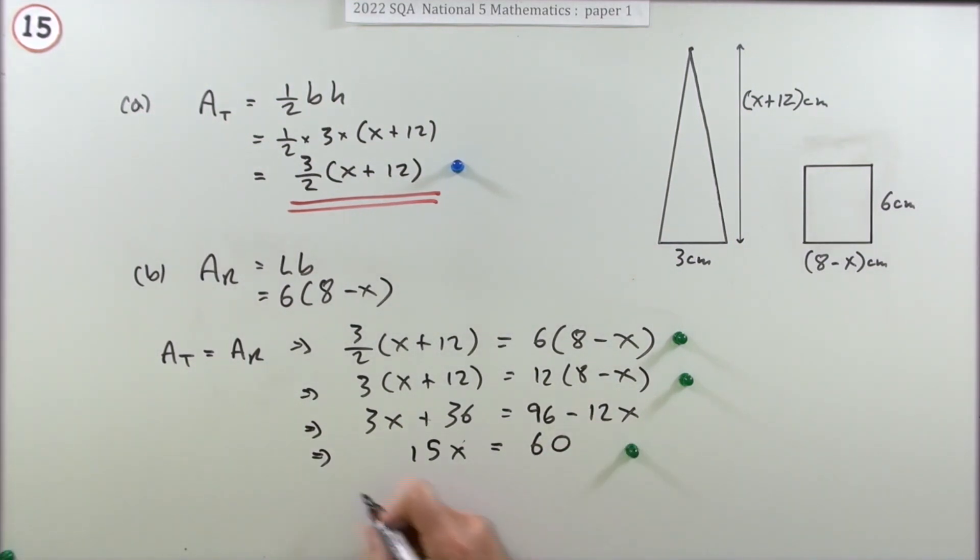Now finally divide it out. It'll be 60 divided by 15, which means that x is equal to 4.